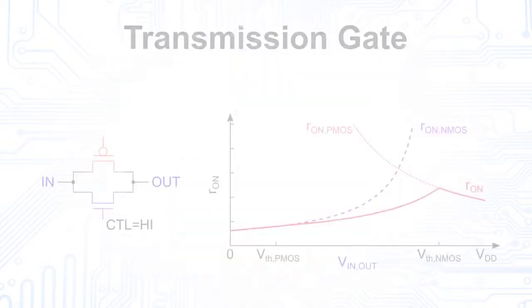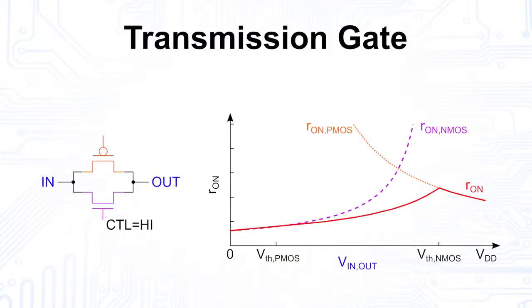One problem of this circuit is its ON resistance, which depends on the level of the input signal. In this figure, we see the resistance of the transmission gate that is switched ON as a function of the input voltage. We see that the resistance of the NMOS increases with increasing input voltage, while that of the PMOS decreases at the same time.